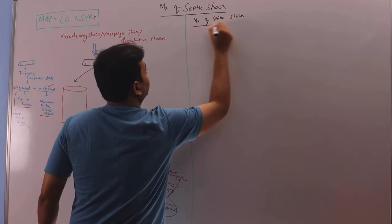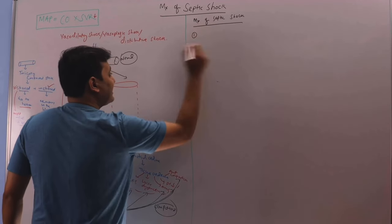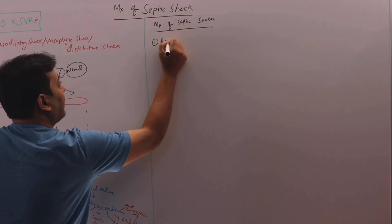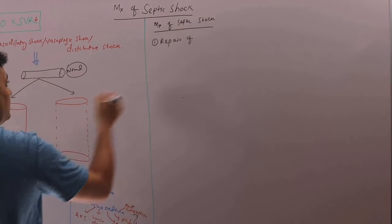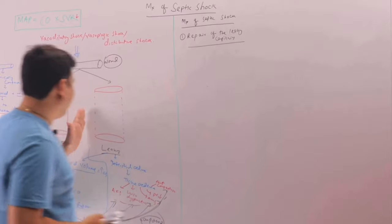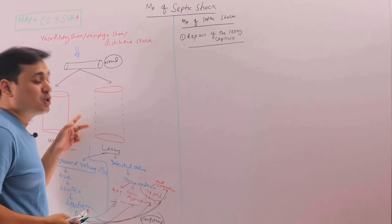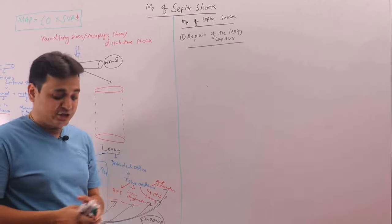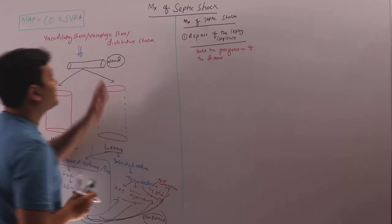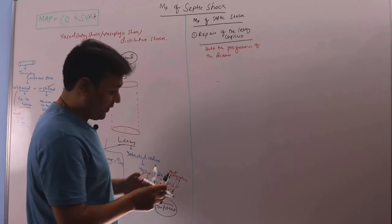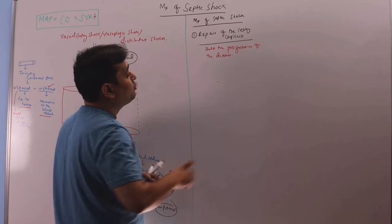From the discussion we have seen, number one concept is repair of the leaky capillary. Leaky capillary means this is a disease process. So we have to halt the progression of the disease. So that is in our case is infection. So treatment of infection. So it will have two components.